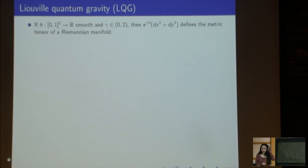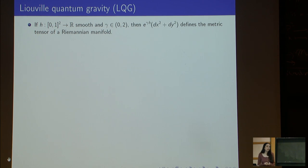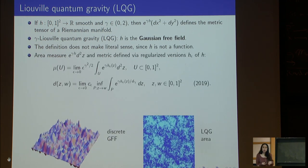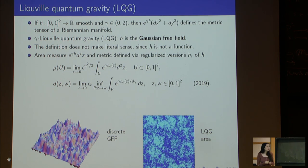To define Liouville quantum gravity, assume h is some smooth function defined on the unit square and γ is a parameter between 0 and 2. We get a Riemannian manifold by rescaling the standard Euclidean metric by e to the power γh. An LQG surface is what we get if we let h equal the Gaussian free field. Since h is a distribution rather than a function, it's not obvious how to define e to the power of a distribution, but several observables of this surface do make rigorous sense. For example, it's possible to define an area measure by replacing h with a regularized version h_ε, defining an area measure from h_ε, and showing the resulting measure converges as ε goes to zero.